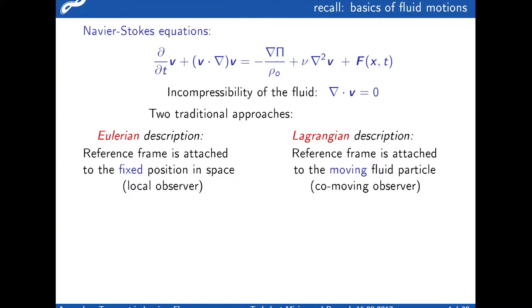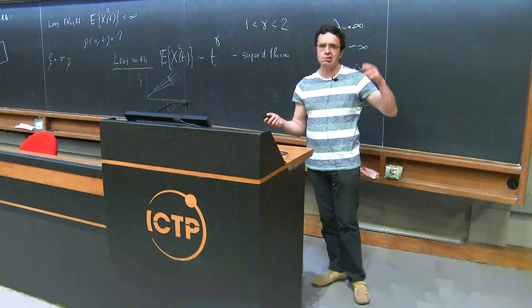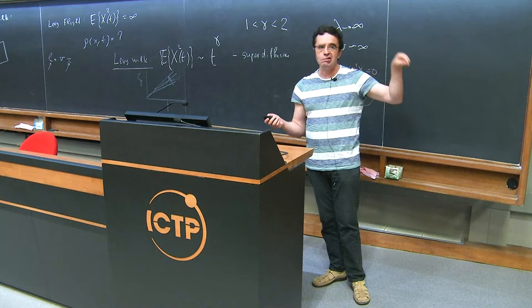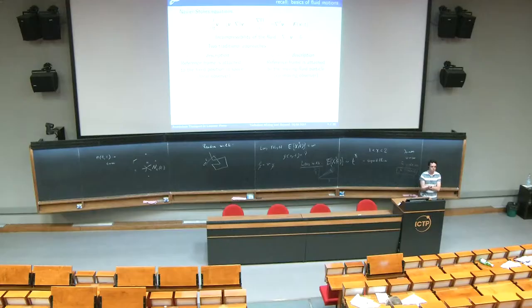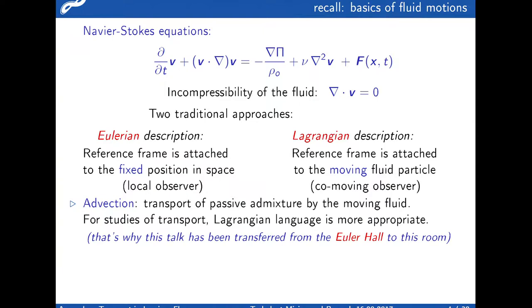Just the basics of fluid motion. There is a Eulerian description where everything is fixed locally, or you let your observation devices float with a tracer, and then you have the Lagrangian picture. For transport, the Lagrangian one is much more convenient. That's probably the reason why our talk was shifted from the Euler Hall to this particular place.